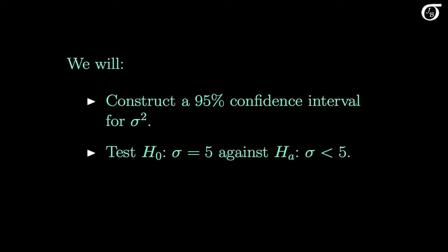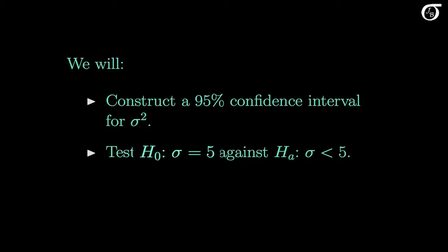Here we will construct a confidence interval for sigma-squared, the population variance. And from there it will be pretty easy to get a confidence interval for sigma, the population standard deviation. Our boss wanted us to show strong evidence that the standard deviation is less than 5, so we will make that our alternative hypothesis in the hypothesis test. The null will be that this is not the case, and sigma equals 5g.